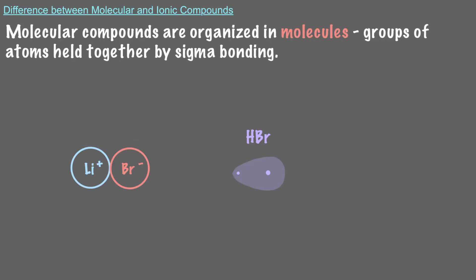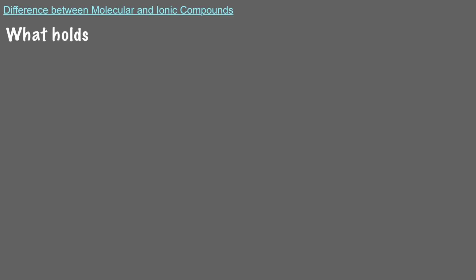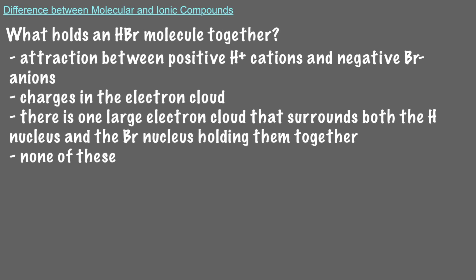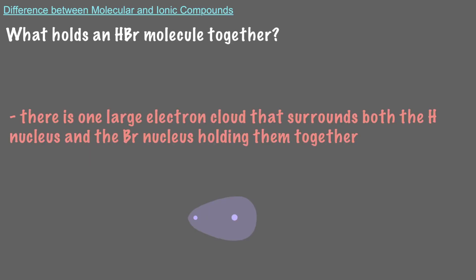That's not the case for HBr. What holds an HBr molecule together? Hydrogen and bromine are both nonmetals, and neither forms an ion to make molecular HBr. What holds HBr together is a sigma electron cloud, a covalent bond, that extends the full length of the molecule.